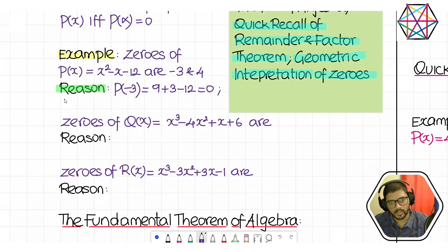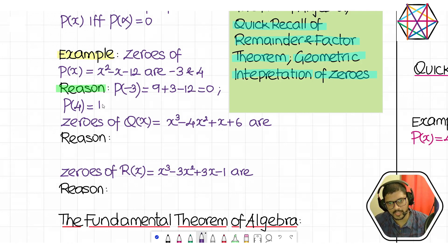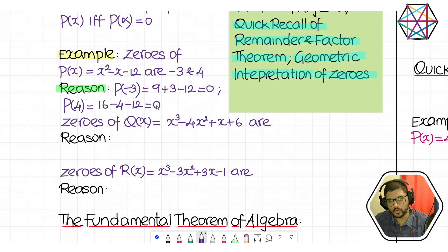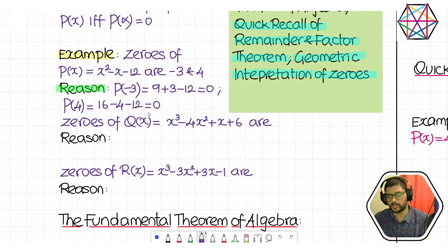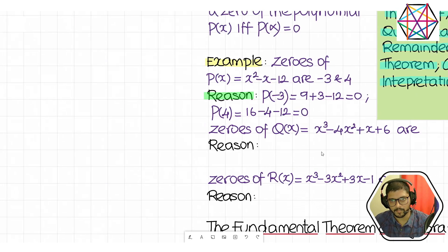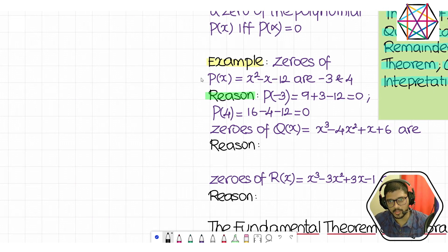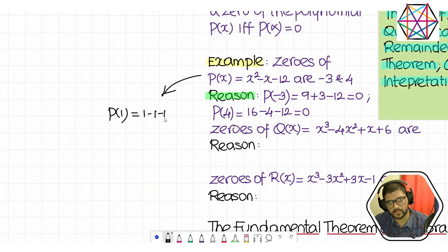What about 4? Consider p(4). Replace x with 4: you get 16 − 4 − 12, which gives you 0. So it is that particular number which, when given as the input, the corresponding output turns out to be 0. You can replace x with anything — I can find p(1), which is 1 − 1 − 12 = −12.